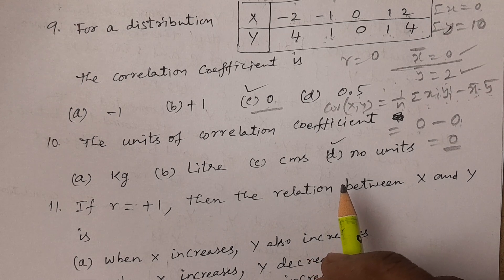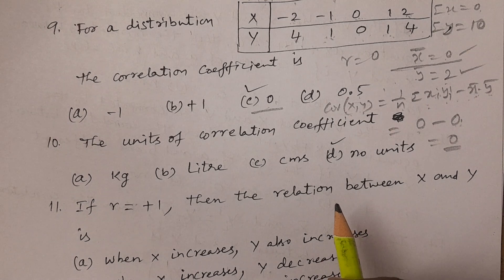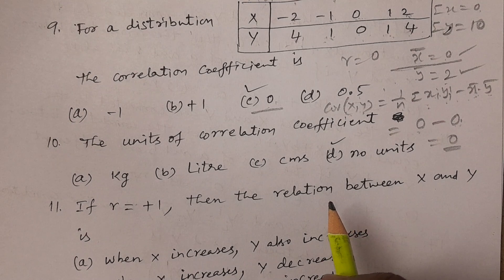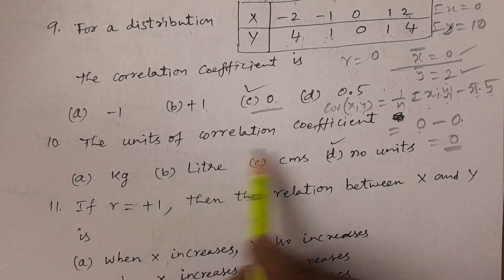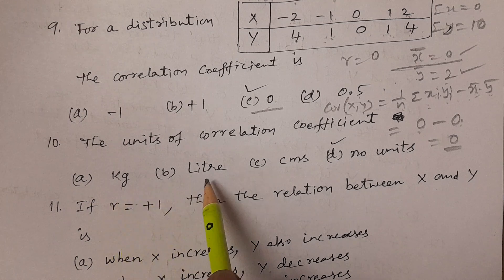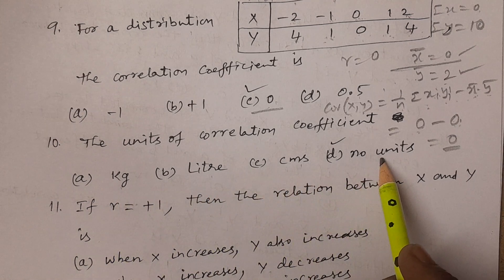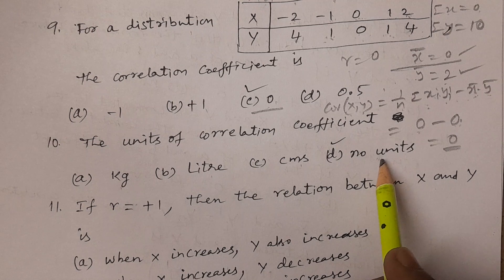One of the first properties of the correlation coefficient is that it is purely a number which does not depend on any units of the given data. The options are kilos, liters, centimeters, and no units. The answer is no units, option D.